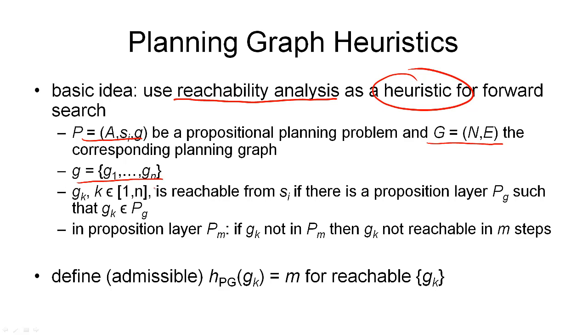Let us assume that our goal consists of sub-goals G1 through Gn here, and then the analysis showed us that for each of these goal components, this goal component is reachable from the initial state if there's a proposition layer P_G such that the goal component that we're looking for is an element of this proposition layer. Or, we can look at this the other way around. Namely, if we look at a proposition layer P_M, then we can say that if our goal component that we're looking for is not in this proposition layer P_M, then that goal component cannot be reachable in M steps.